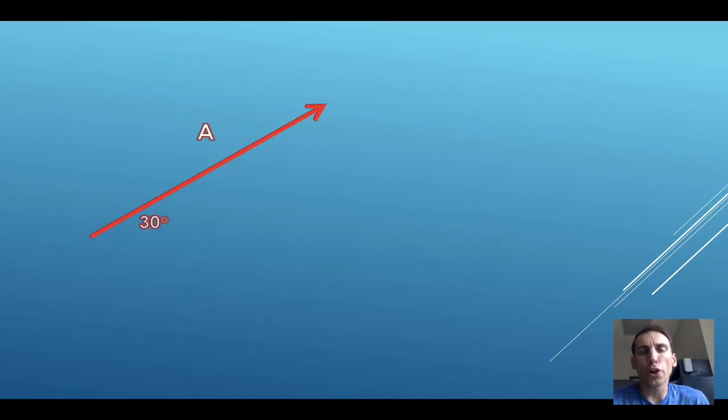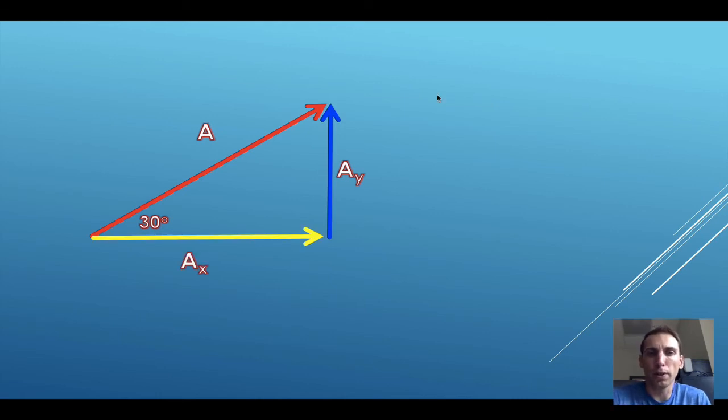We're able to determine the horizontal and vertical components of vectors using right triangle trig and SOHCAHTOA. So let's say we have this vector A directed 30 degrees above the horizontal, up and to the right. Its vertical component, let's label A sub Y, and its horizontal component, let's label A sub X. Clearly, X and Y are going to be perpendicular to each other. So we have ourselves a right triangle. The original vector is our hypotenuse while the components are the legs.